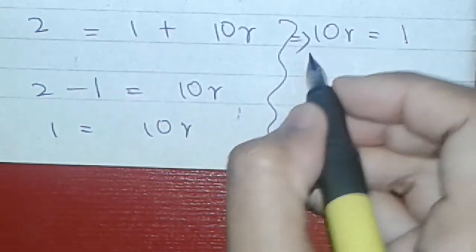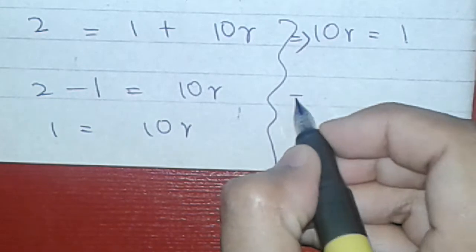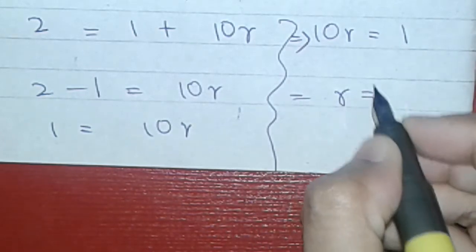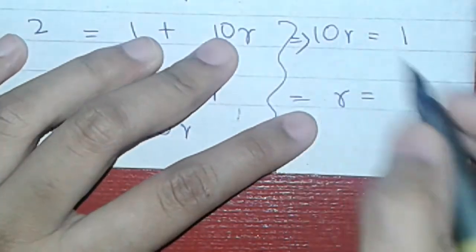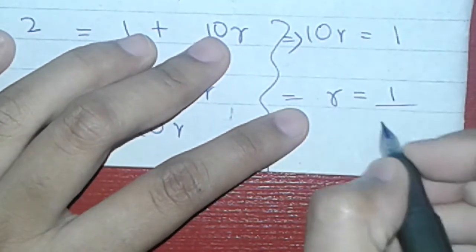So this will be 10r is equal to 1. Here we will single r and find it. So this is 1 upon 10.